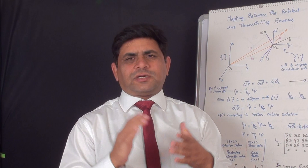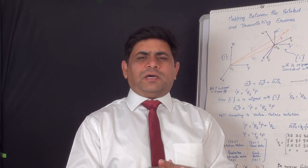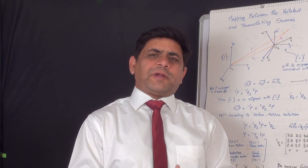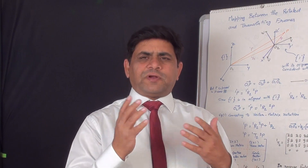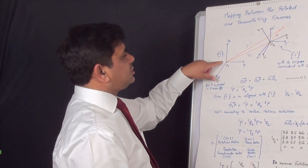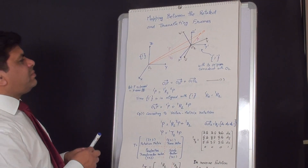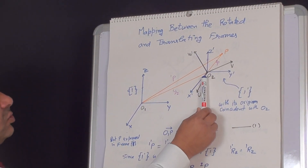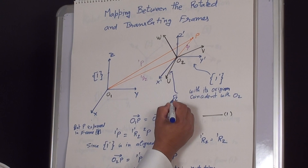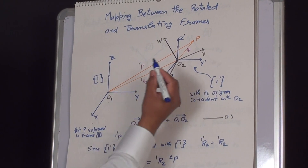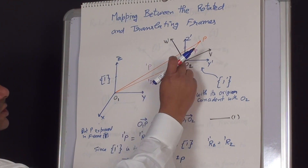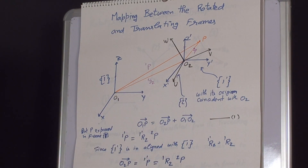This lecture is related to kinematics and mapping concerned with both translation and rotation. In practice, when assigning frames to a manipulator, there may be both translation and rotation. To illustrate this, consider two different frames: Frame 1 with origin o1 and Frame 2 with origin o2. Frame 2 shows both translation and rotation with respect to Frame 1.